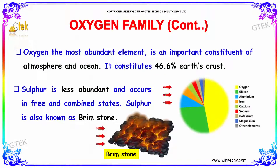Oxygen is the most abundant element and an important constituent of the atmosphere and ocean, constituting 46.6% of the Earth's crust. Sulphur is less abundant and occurs in free and combined states, and is also known as brimstone.